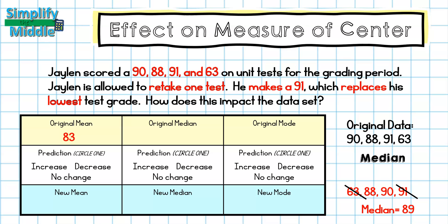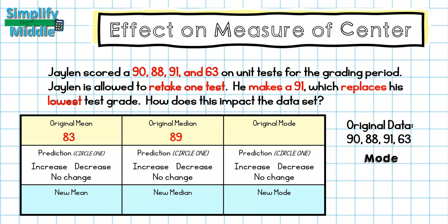You could also add those two middle numbers together and divide by two to get the same answer. For mode, I don't have any numbers that repeat, so there actually is no mode here. I can check that by putting these in order from least to greatest and seeing that nothing repeats.